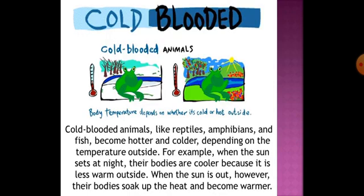Cold-blooded animals are animals whose body temperature depends on whether it is cold or hot outside. For example, reptiles, amphibians, and fish become hotter and colder depending on the temperature outside. When the sun sets at night, their bodies are cooler because it is less warm outside. When the sun is out, however, their bodies soak up the heat and become warmer.